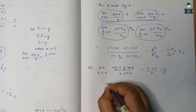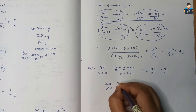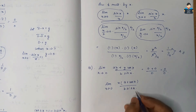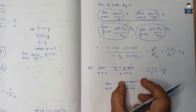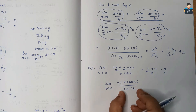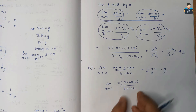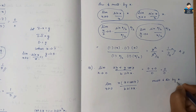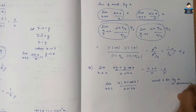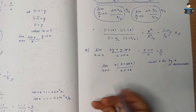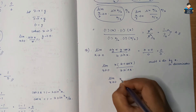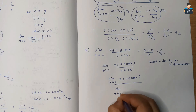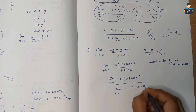We take x as common in the numerator: x(a + cos x). For the denominator, we multiply and divide by x: b·sin(x) × (x/x). So we get limit x tends to 0 of x(a + cos x) divided by [b × (sin x / x) × x]. The x cancels.